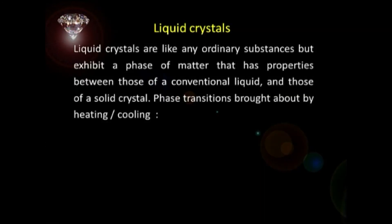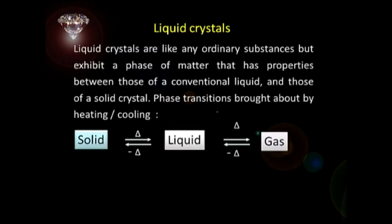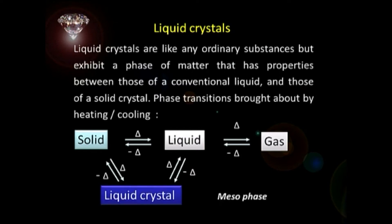And liquid crystals — where do they fall in this classification? They are like ordinary substances but exhibit a phase of matter that has properties between those of a conventional liquid, because they flow, and those of a solid crystal. Upon heating, liquid crystalline materials do not get converted directly into a liquid. Instead, they go to the liquid crystalline state, and then on further heating they become liquids, and can be vaporized at still higher temperature.